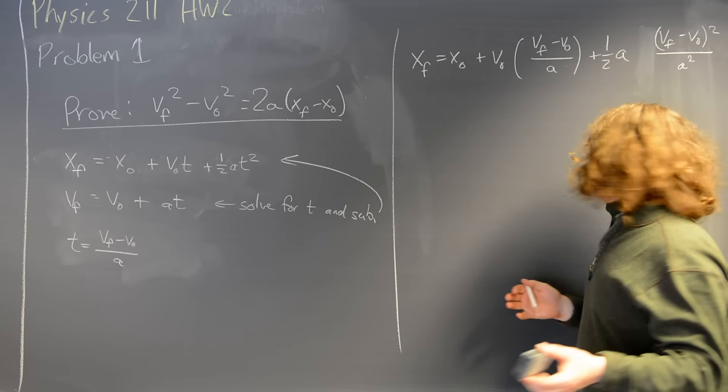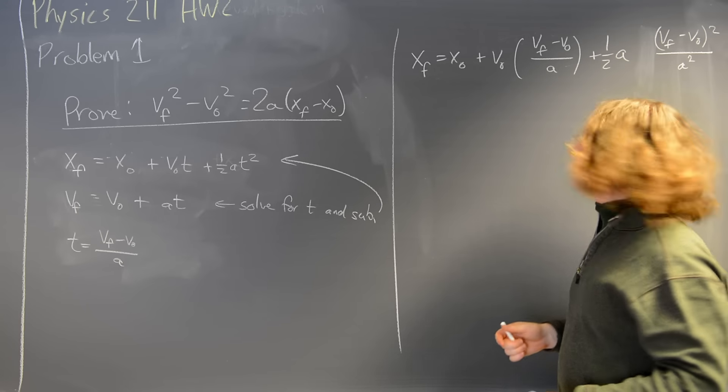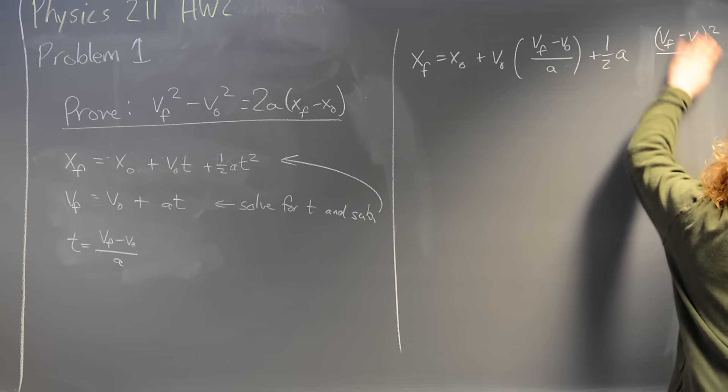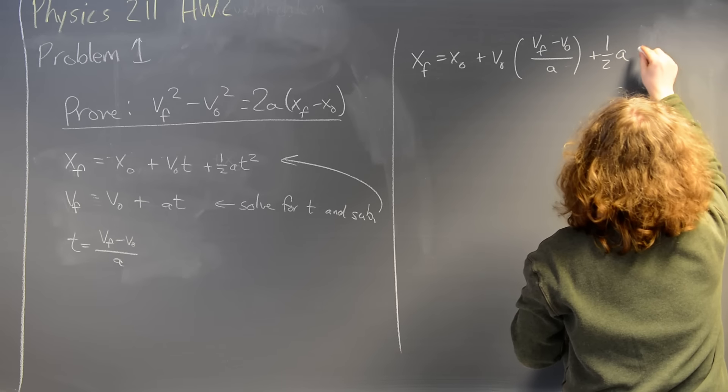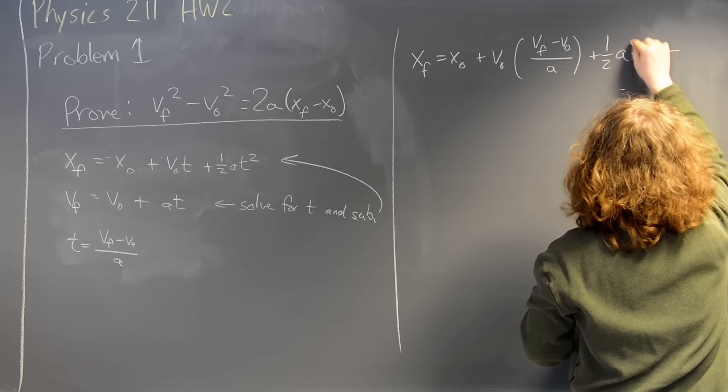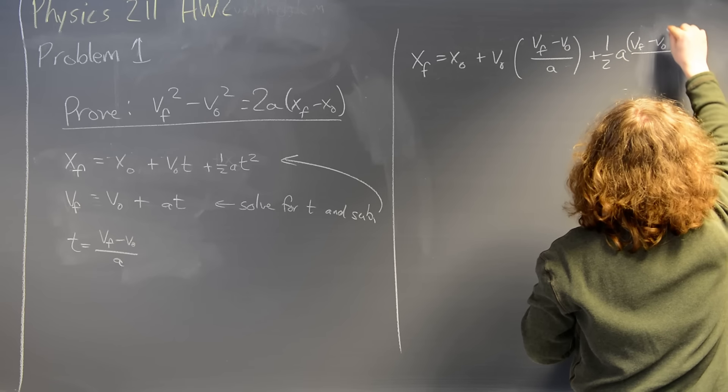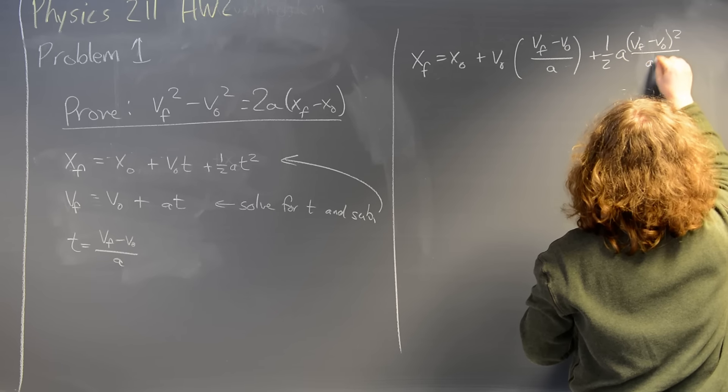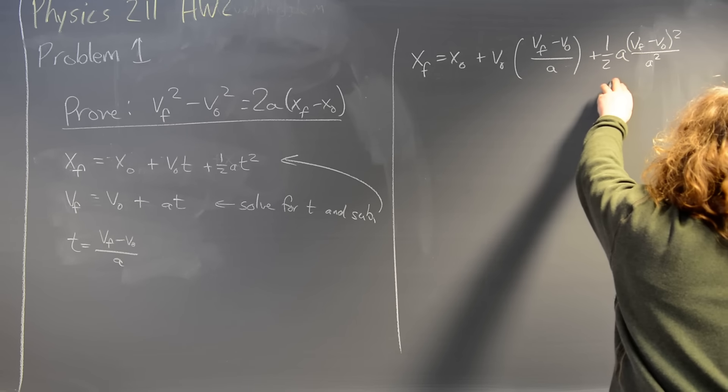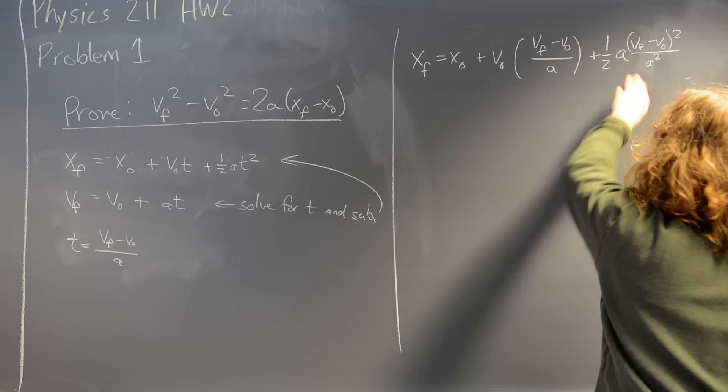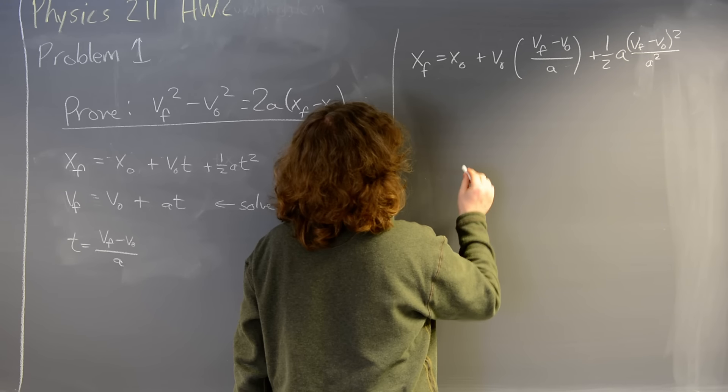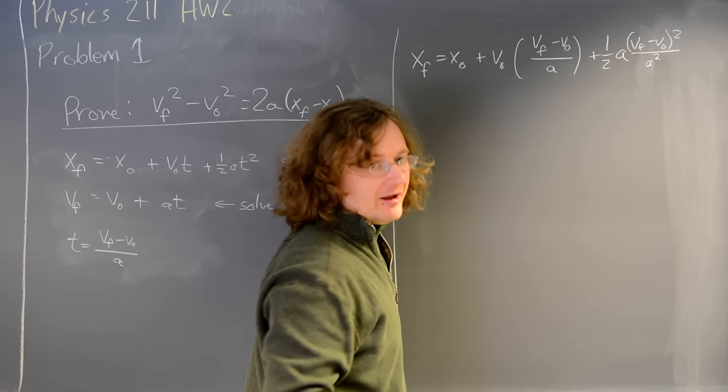with both numerator and denominator squared. Now, fractions are a pain. I want to get rid of my fractions. Actually, I think this may be off the camera. Let me move this term back over. So that's going to be one half a times vf minus v0 all squared over a squared. So I'm going to multiply by 2a on both left and right. And I'm also going to move x0 to the left.